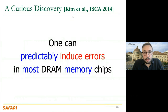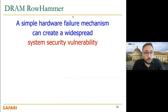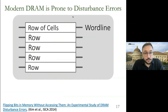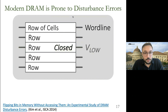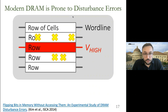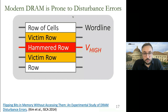As a curious phenomenon, we observe that one can predictably induce errors in most DRAM memory chips — this is called DRAM RowHammer. In DRAM, cells are organized as an array of DRAM rows. To access a piece of data, we need to first activate or open a DRAM row, and then we can access data inside it. To access data in another row, we close the open row and open the other row. When we do this open-and-close operation many times, we observe bit-flips in the physical addresses of nearby DRAM rows. We name the row we keep opening and closing the aggressor row, and the nearby affected rows the victim rows.